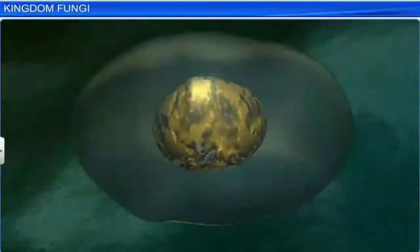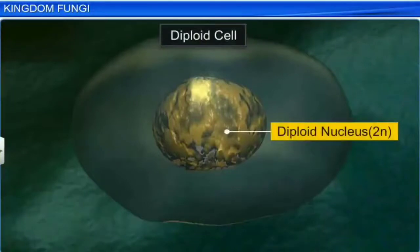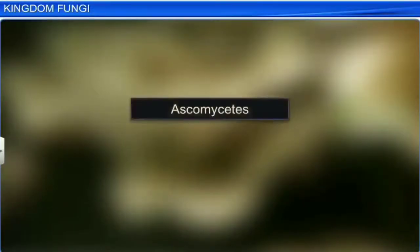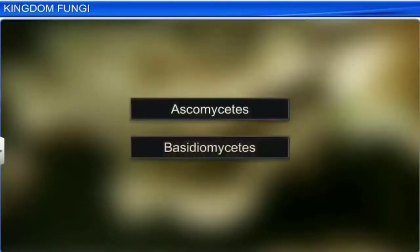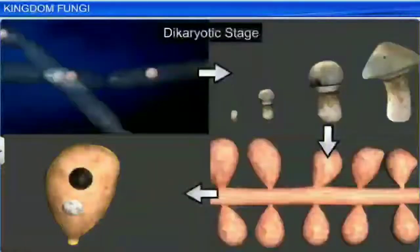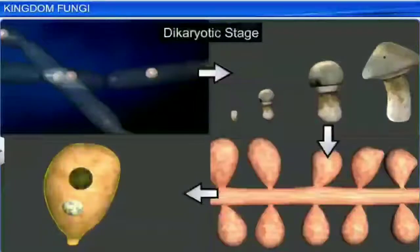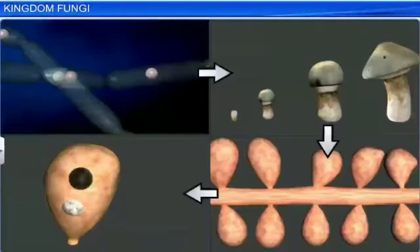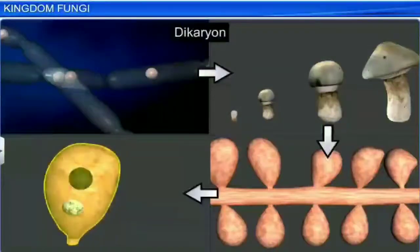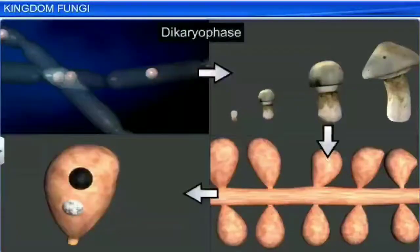In some fungi, the fusion of two haploid cells immediately results in the formation of diploid cells, or 2N. In other fungi like Ascomycetes and Basidiomycetes, an intervening Dikaryotic stage occurs. This condition of two nuclei per cell is called Dikaryon, and the phase is called Dikaryophase.